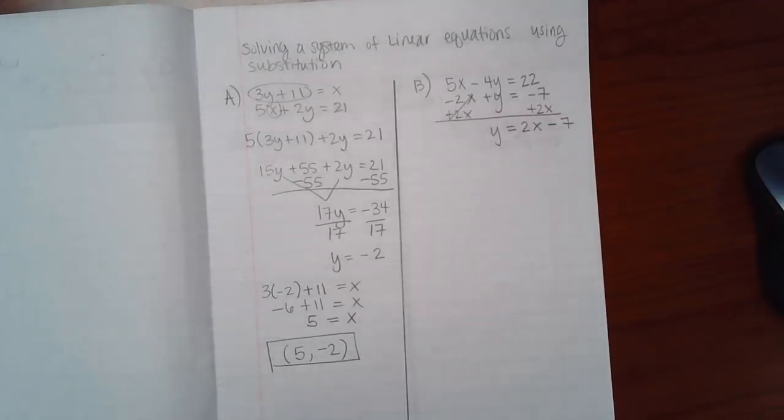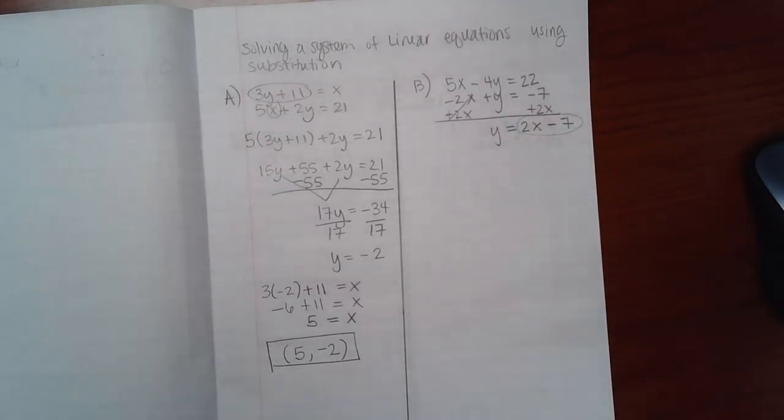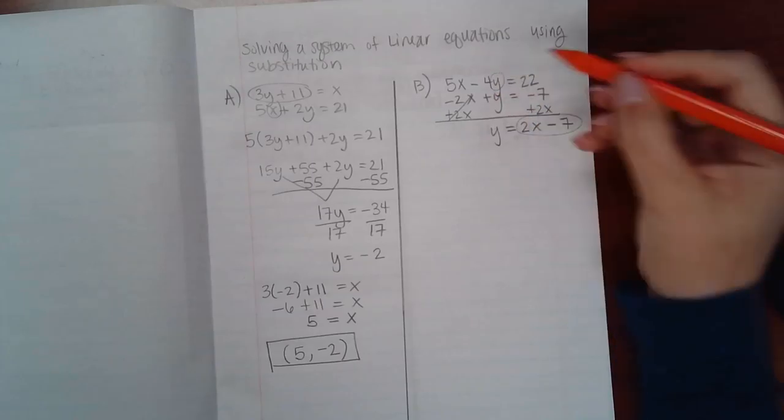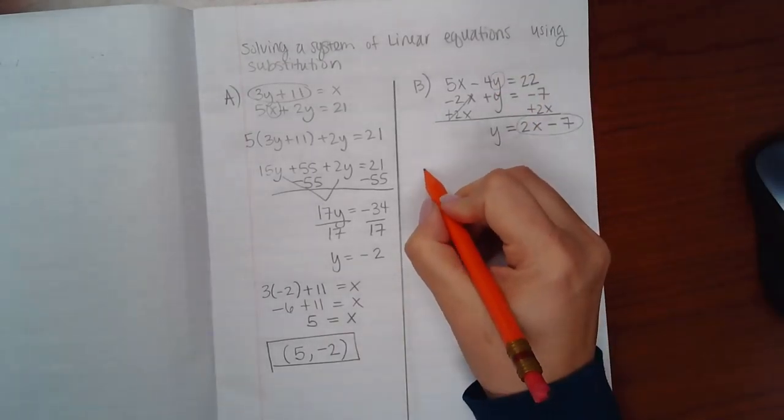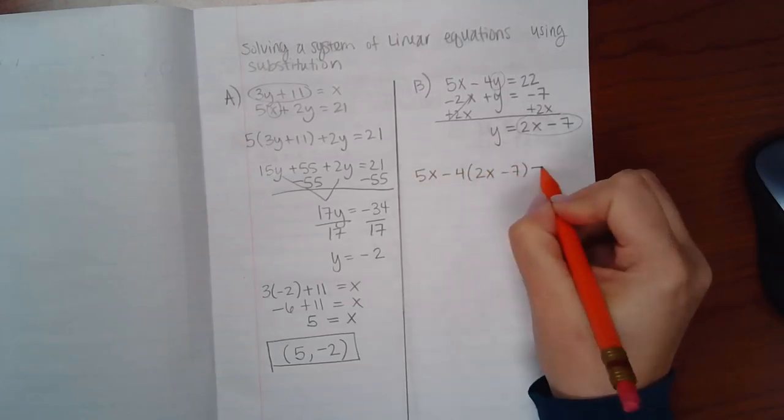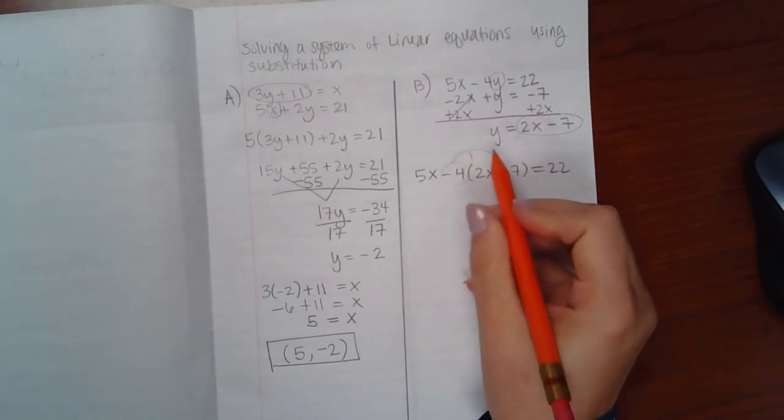Since I used the bottom equation to solve for y, that value for y, this expression here, has to get plugged into the top equation. Which means that this y will now become the 2x minus 7. So I have 5x minus 4 times 2x minus 7 equal to 22. If I distribute the negative 4,